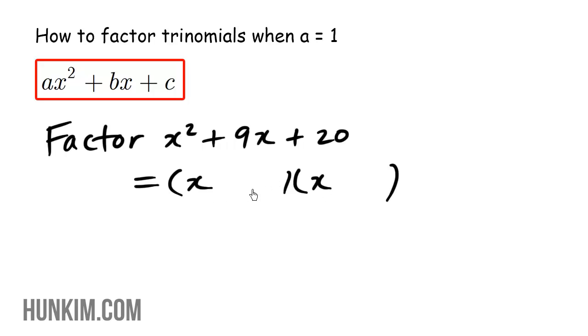Now the challenge is to find two numbers that multiply to be twenty, yet add to be positive nine. You can try doing it in your head, but if it's a bit daunting, we can try listing the factors. What times what is twenty?